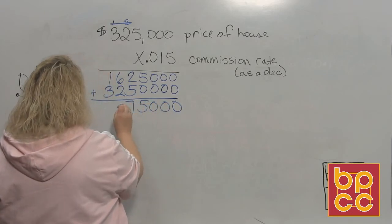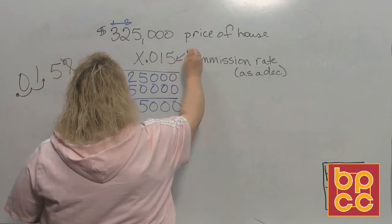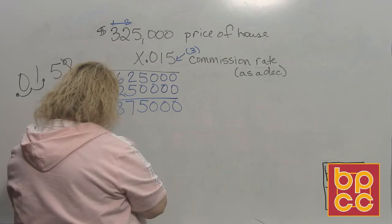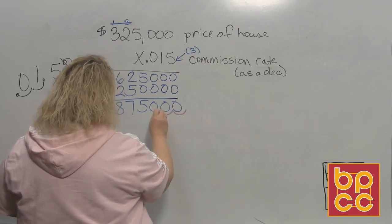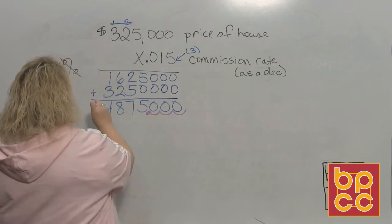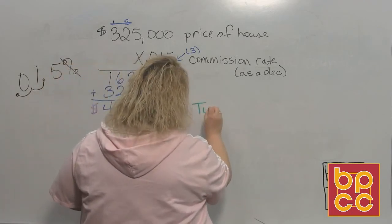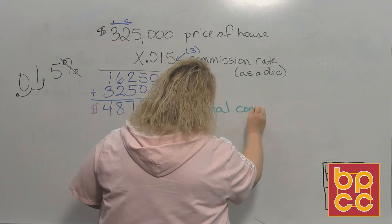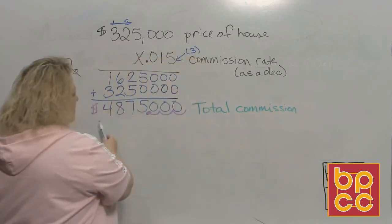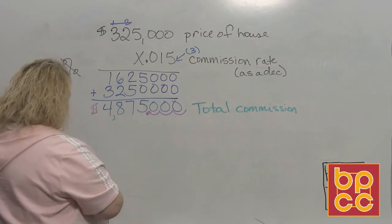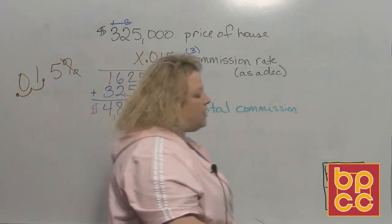All right, this time, how many decimal places do I have? 3. So from the back, I'm going to move my decimal from right to left, 1 and 2 and 3 places. So this is how much you would get in commission. This is your total commission. So if you're going to sell a house, selling one that big is going to be profitable because you'll make $4,800 or almost $4,900 off of that one house.